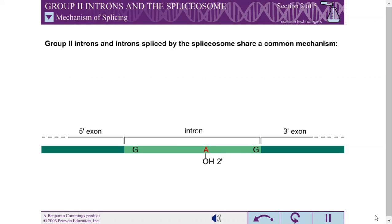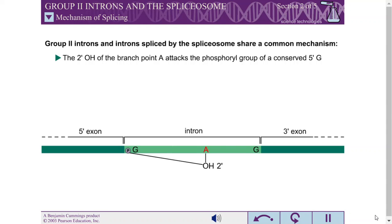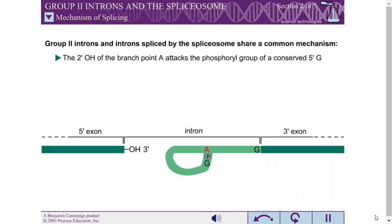In the first of two reactions, the 2' hydroxyl of the conserved branch-point adenine acts as a nucleophile and attacks the phosphoro group of the conserved guanine in the 5' splice site. The reaction is a transesterification in which the phosphodiester linkage at the 5' splice site is replaced with a new phosphodiester linkage between the branch-point adenine and the 5' splice site guanine. This three-way junction is the reason the adenine is called a branch-point.